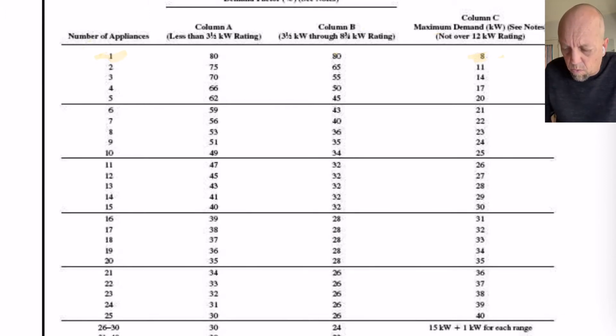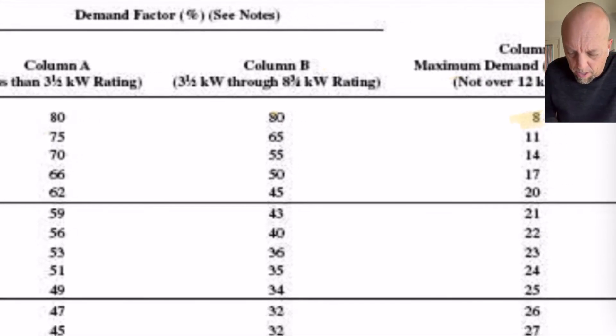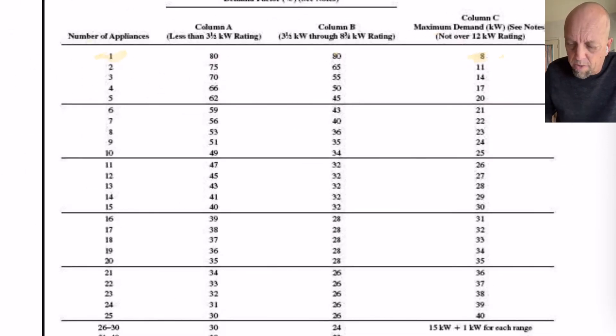there is an 8, which is for 8,000 watts because this is for ranges larger than 8.75 to 12kW. It tells you that the maximum is from column B to column C. So, 8kW is already figured out for you for this.